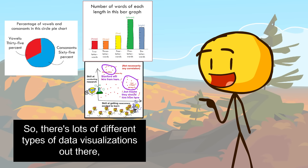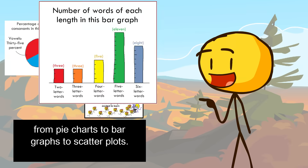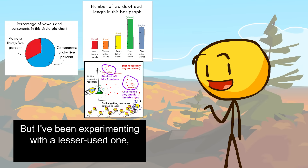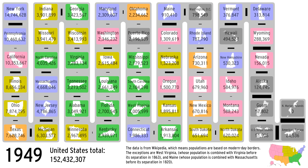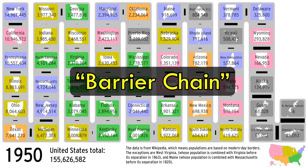Hi everyone! There are lots of different types of data visualizations out there, from pie charts to bar graphs to scatter plots. But I've been experimenting with a lesser-used one, which you're seeing on screen, and I'm thinking of calling it a barrier chain.